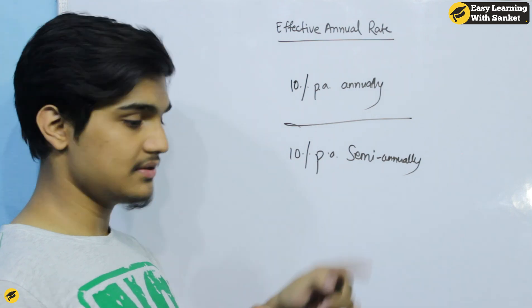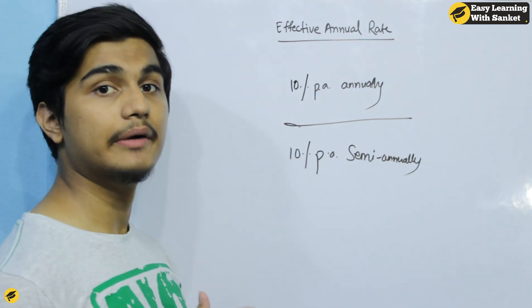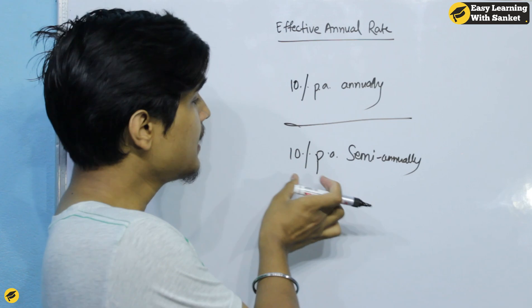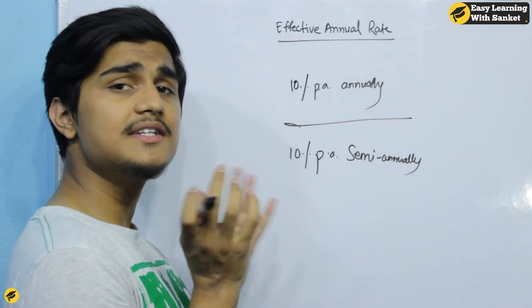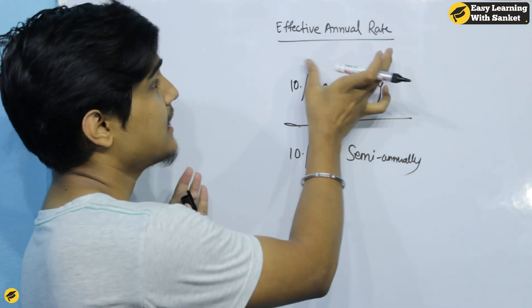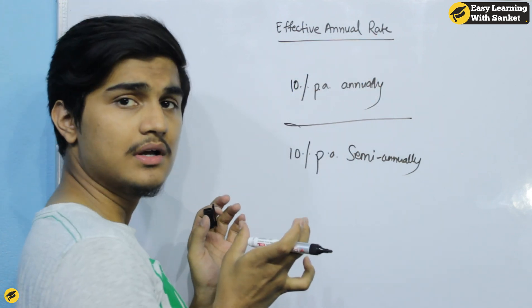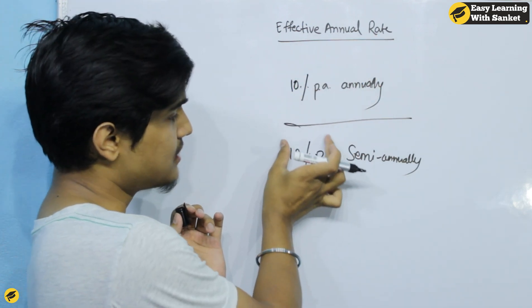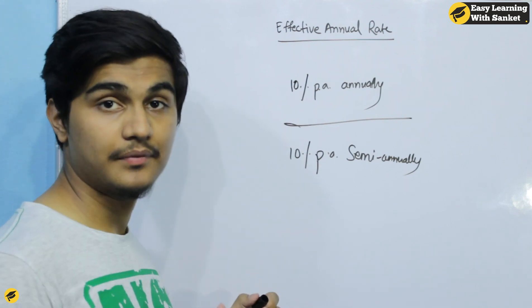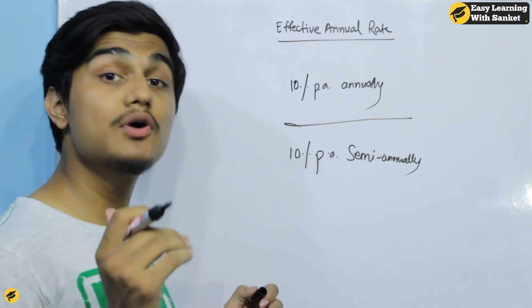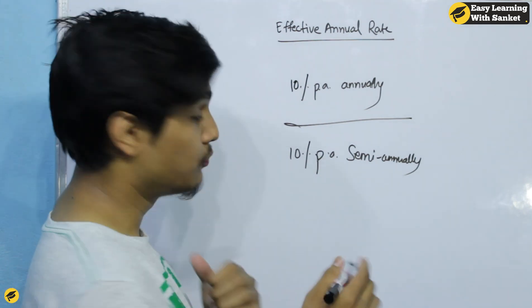Or 10% per annum compounded semi-annually. In this situation, there are two compounding periods per year and the sum compounds at 10% semi-annually. Now the Effective Annual Rate formula gives the true annual return.